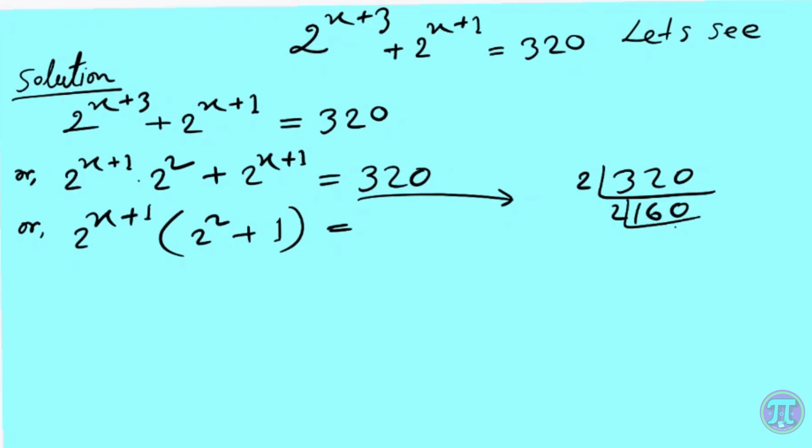Here we factorize 320 using Euclid's method. We found 6 times of 2 into 5, giving us 2^6 × 5.